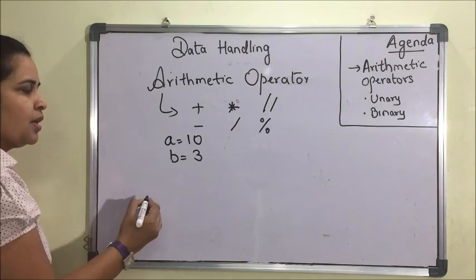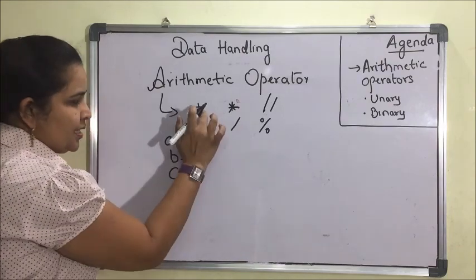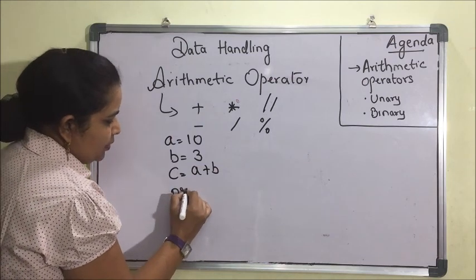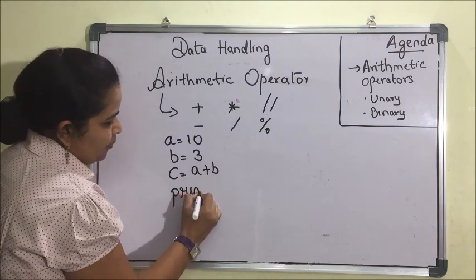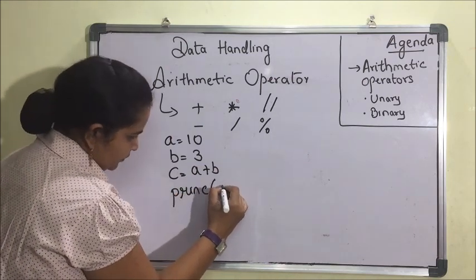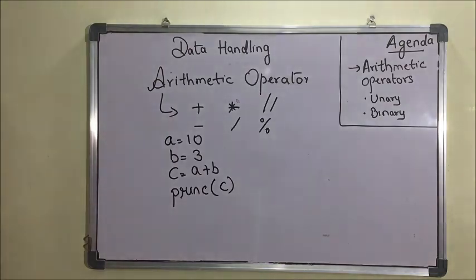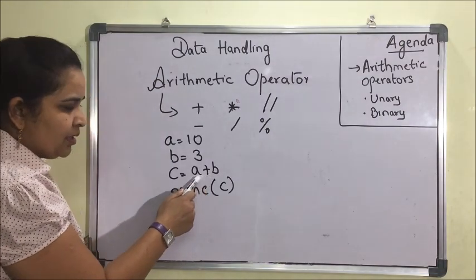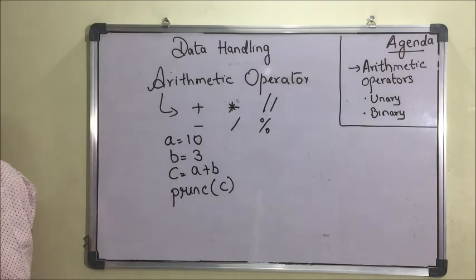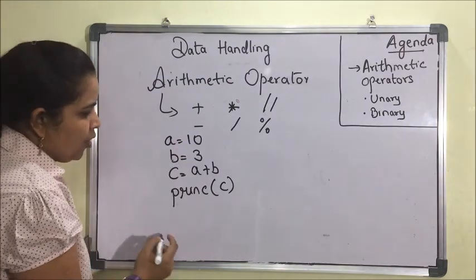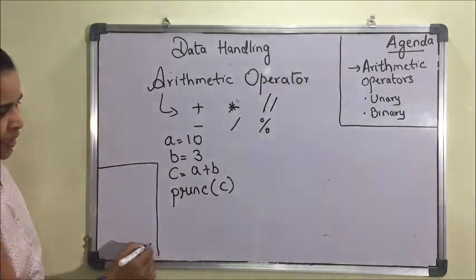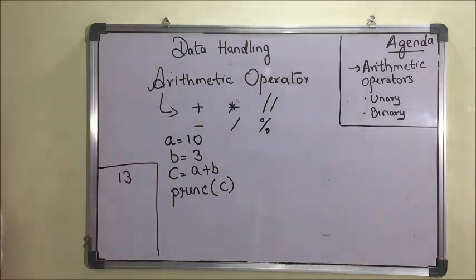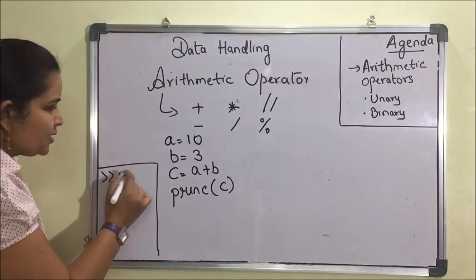We can write a simple program for addition of two numbers. These are the operands and this is the binary operator. The result will be printed — for example, if a = 10 and b = 3, the result will be 13.